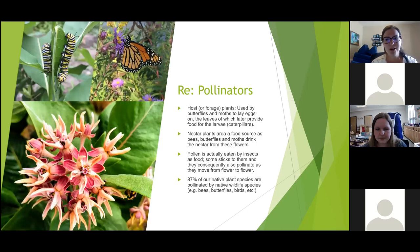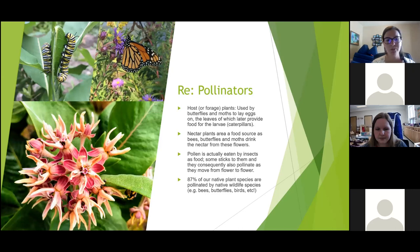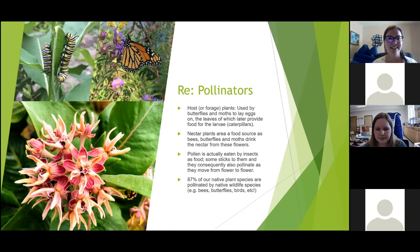Pollinators use native plants in several ways. They could be host plants used by butterflies and moths to lay eggs on. All of the pictures here show milkweed, which is the host plant for monarch butterflies. You can see the monarch butterfly in the top right photo and the monarch caterpillar in the left photo. Milkweed is a host plant for the monarch butterfly, which is a species of special concern in Canada. It's a great idea to grow milkweed to increase the monarch's habitat.